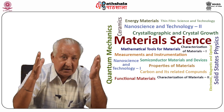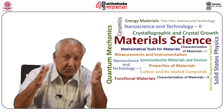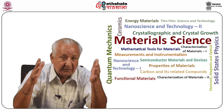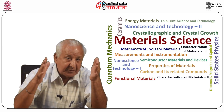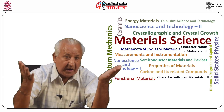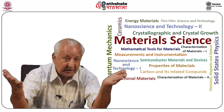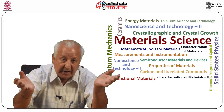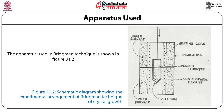The material to be crystallized is contained in a cylindrical crucible which is lowered through a two-zone vertical furnace, as shown in figure 31.3. The temperature profile of the furnace is arranged as shown in figure 31.3. This method, however, cannot be used for materials which expand on solidification. Figure 31.2 gives the schematic diagram of the experimental arrangement of Bridgman technique, and figure 31.3 shows the two-zone vertical furnace with its temperature profile.